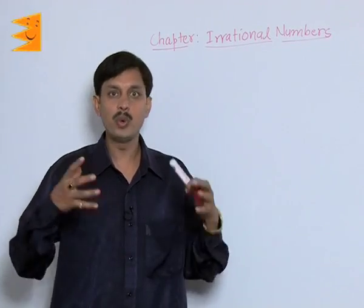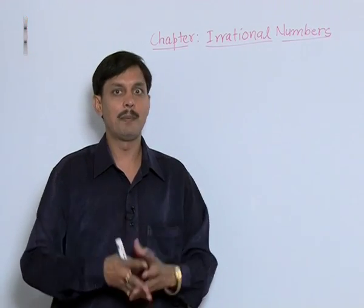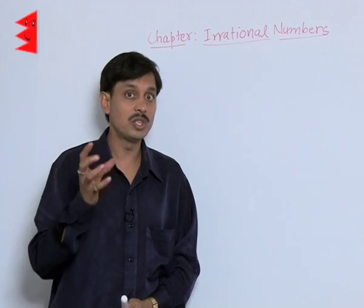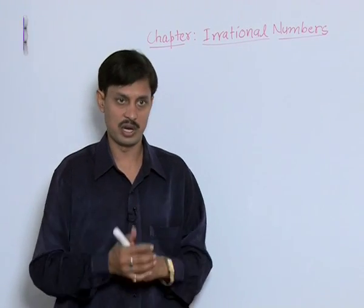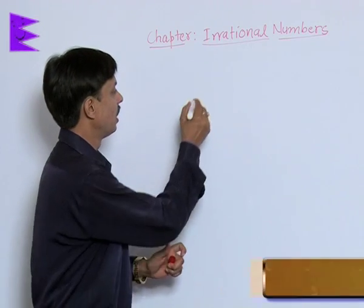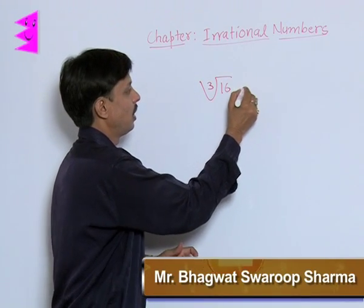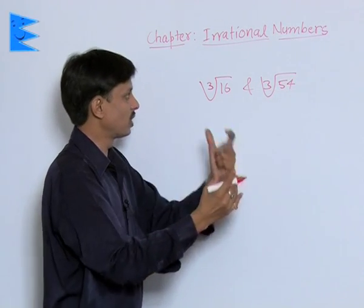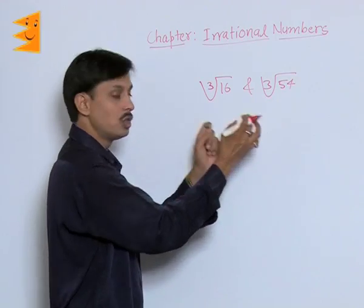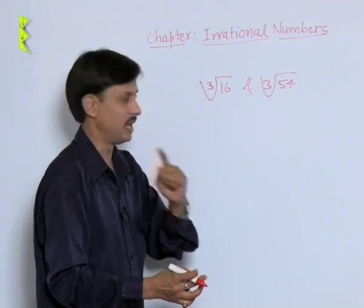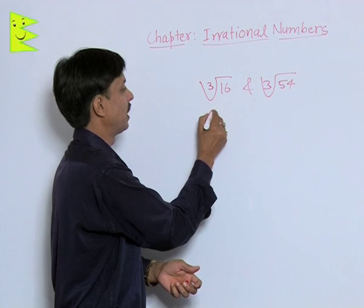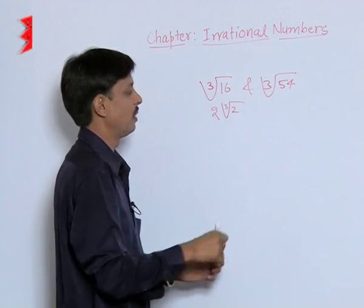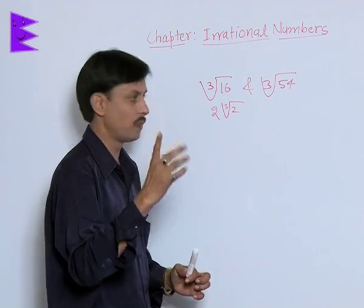I want to give you a few examples to help you understand which surds are like surds and which are not. Suppose I take the cube root of 16 and the cube root of 54. The question is: are these two like surds? Cube root of 16 can be written as 2 into cube root of 2, because 16 can be written as 2 × 2 × 2 × 2.